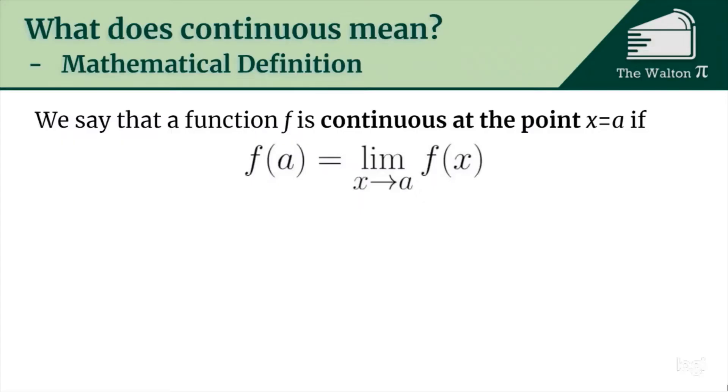Now let's get started. So when we say that a function is continuous at the point x equals a, that means that f(a) is equal to the limit as x approaches a of f(x).